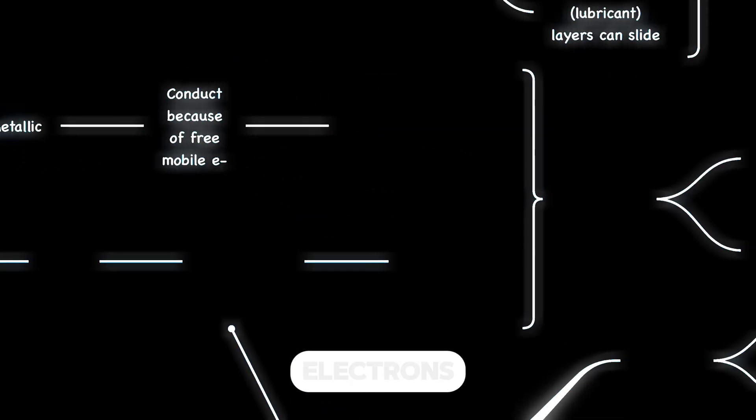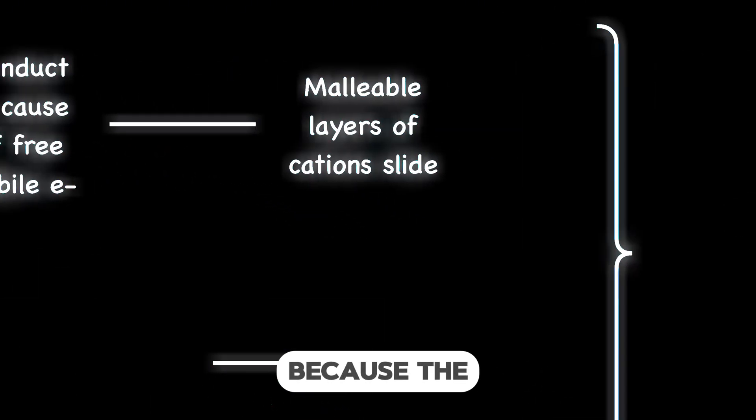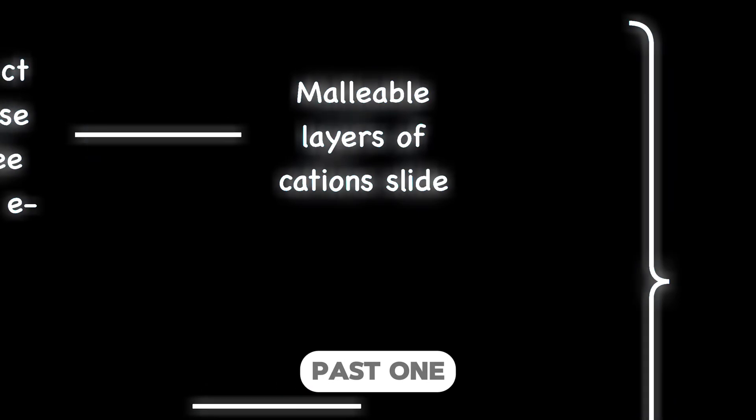Metals conduct electricity in all forms due to the presence of mobile electrons. Metals are malleable because the cation layers can slide past one another.